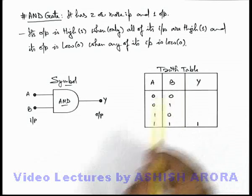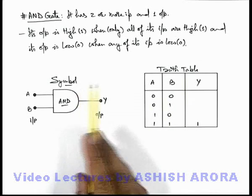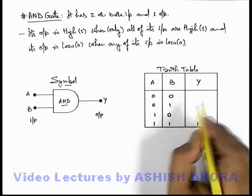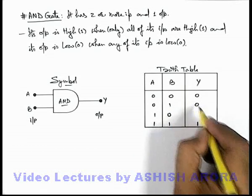And we have seen that the output will be low when any of the input is low. So in these first 3 combinations, here we can see that the output would be at zero.